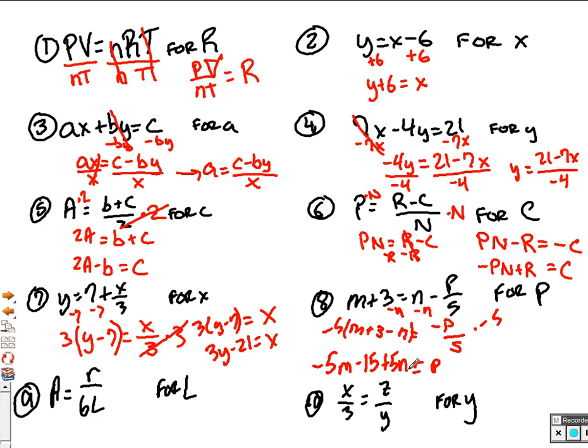The last kind that you'll see are where the variable you're solving for is in a denominator. I'm going to look at number 10 actually first. You have two fractions equal to each other. I'm just going to cross multiply. That's the easiest way to do it. So I'm going to get x times y equals 3 times z. And now it's really simple to get y by itself. You just need to divide by the x because it's combined by multiplication. So you'll have y equals 3z over x, just like that.